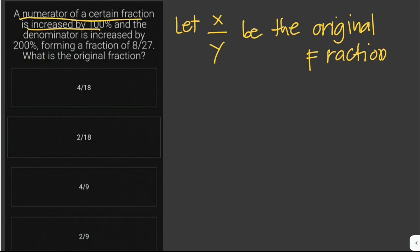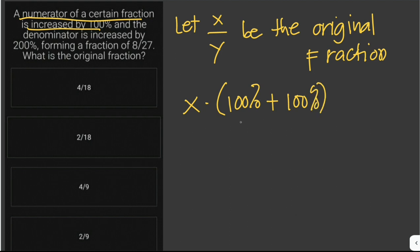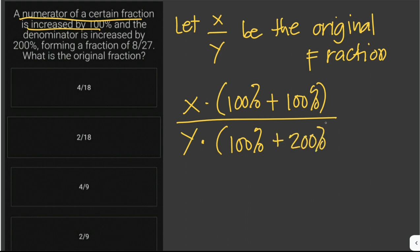The numerator is increased by one hundred percent, so we add one hundred percent to x — that's the original value plus one hundred percent of it, giving 2x. The denominator y is increased by two hundred percent, so we add two hundred percent to get 3y. This forms the fraction equal to eight over twenty-seven.